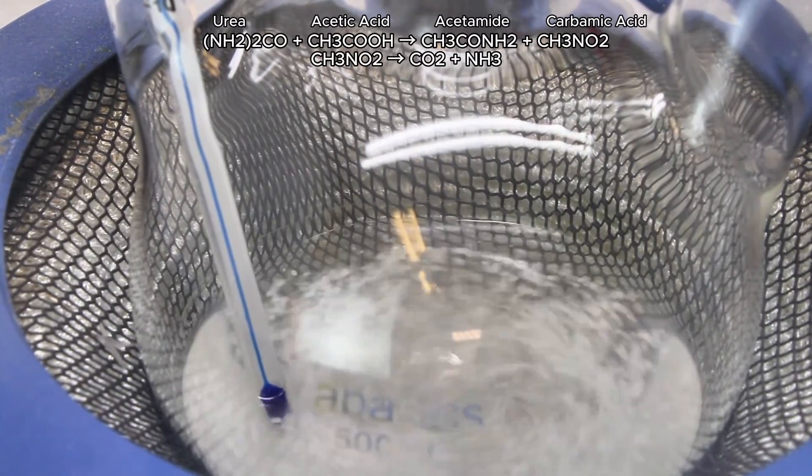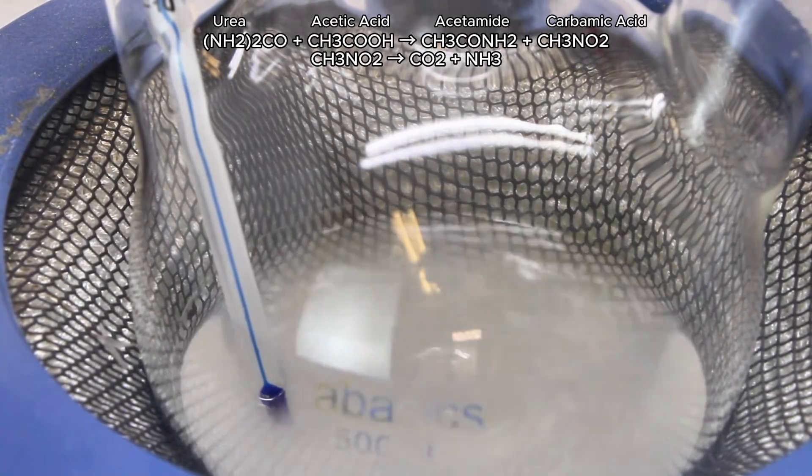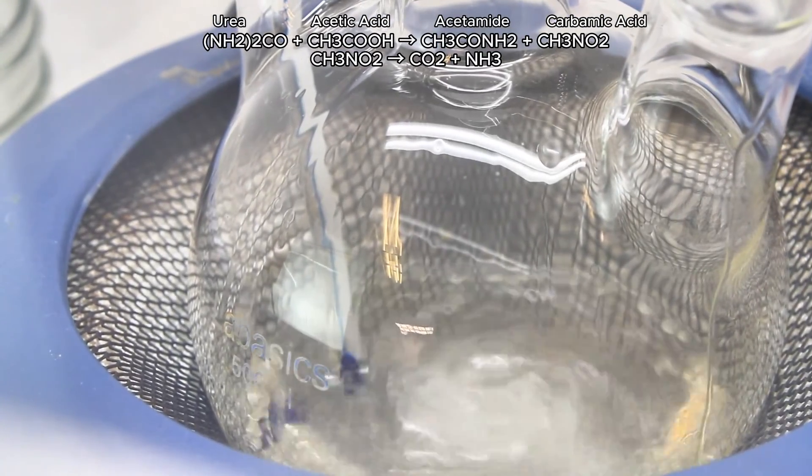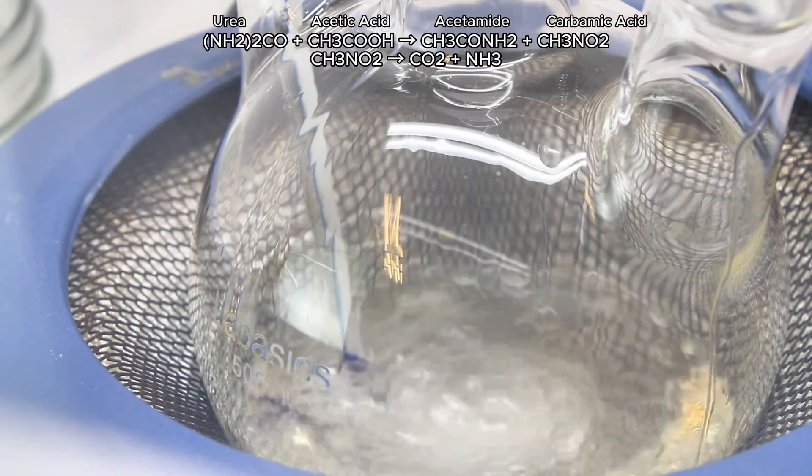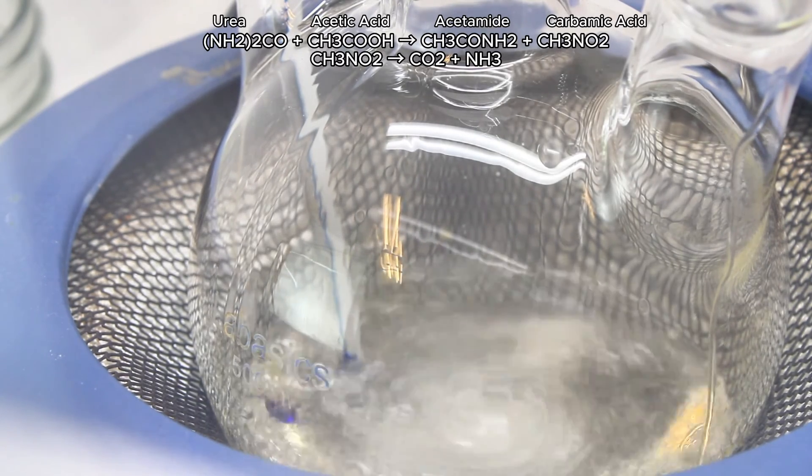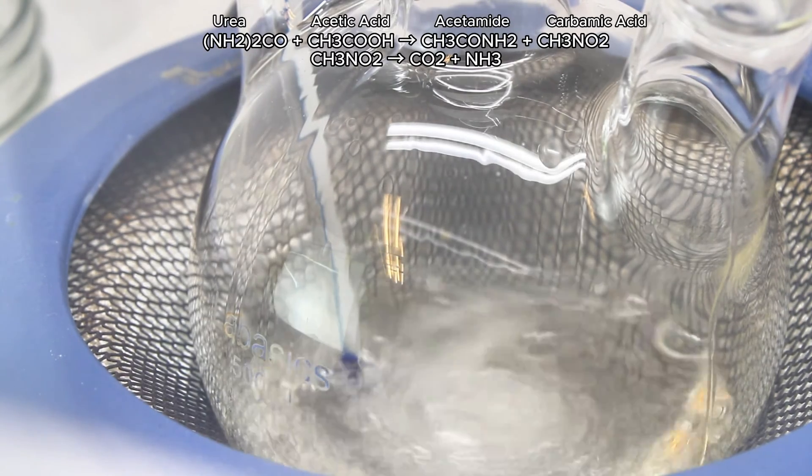Carbamic acid, however, is highly unstable and in a second reaction decomposes into ammonia and carbon dioxide. Ammonia and carbon dioxide are both gases and much of what is produced floats away and out of the condenser, which can be confirmed by holding a piece of litmus paper over the opening of the condenser.